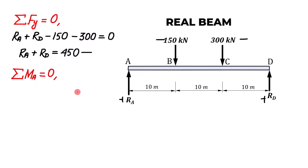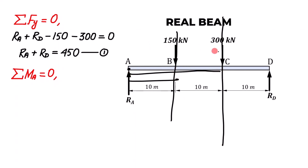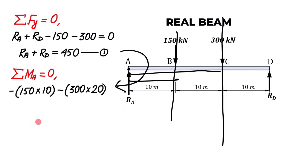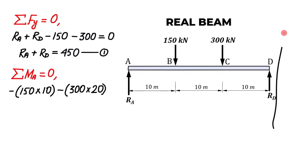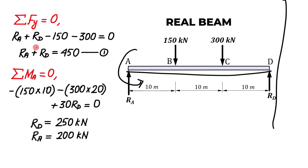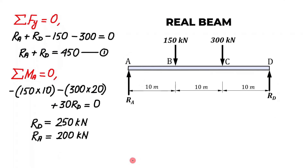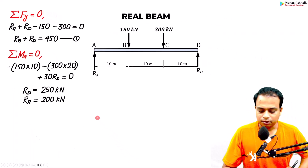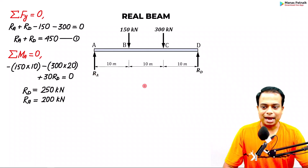Taking moment about A: 150 multiplied by 10 and 300 multiplied by 20 give clockwise moments at A, while RD multiplied by 30 gives an anti-clockwise moment at A. Solving gives RD, and substituting back gives RA. The values come out as RA = 200 and RD = 250.